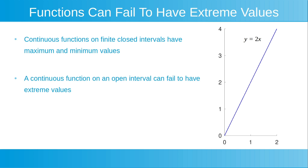A continuous function on an open interval can fail to have extreme values. Shown to the right is a plot of the continuous function y is equal to 2x, on the open interval from x is equal to 0 to x is equal to 2. This open interval includes all points between x is equal to 0 and x is equal to 2, not including the endpoints. This continuous function on this open interval does not have an absolute maximum value, and also does not have an absolute minimum value.